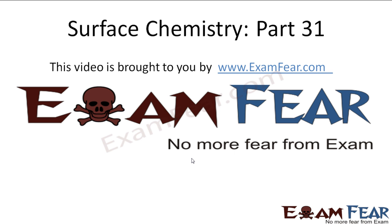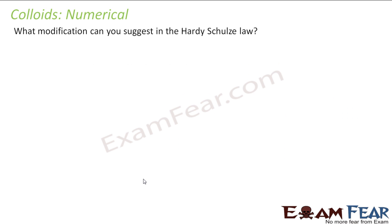Hello friends, this video on surface chemistry part 31 is brought to you by examfear.com. The question is: what modification can you suggest in the Hardy-Schulze law? Hardy-Schulze law says that greater the value of the valency of the ions, greater is the power of precipitation. For example, if I take Cl minus and SO4 2 minus, out of these my SO4 2 minus will have more power to coagulate.